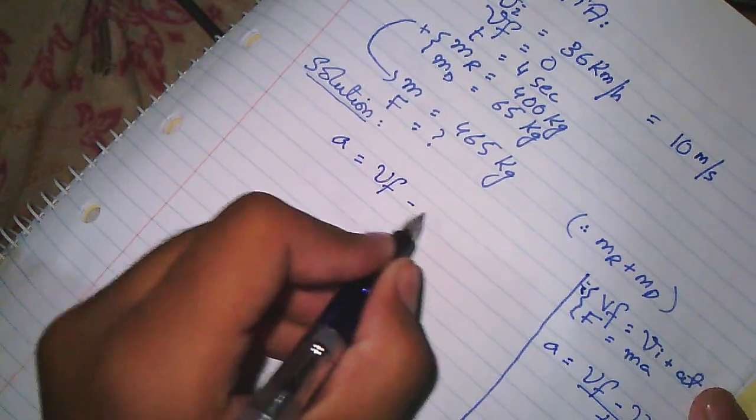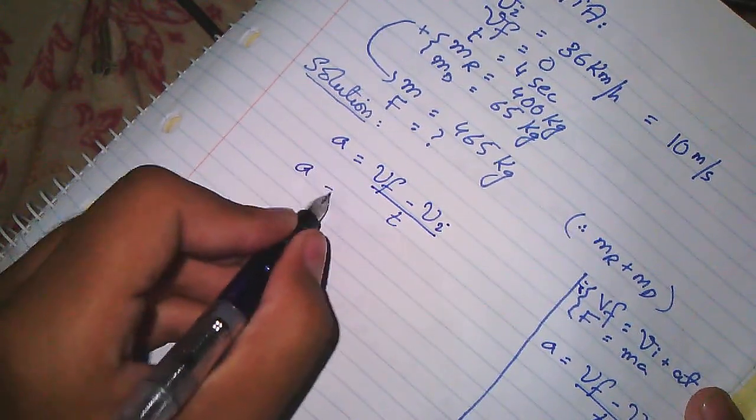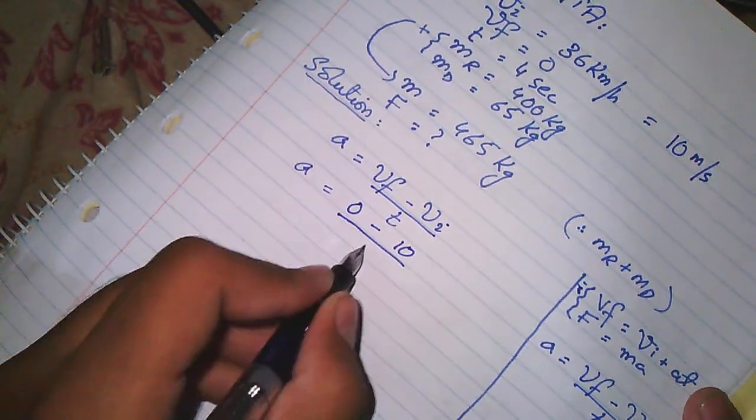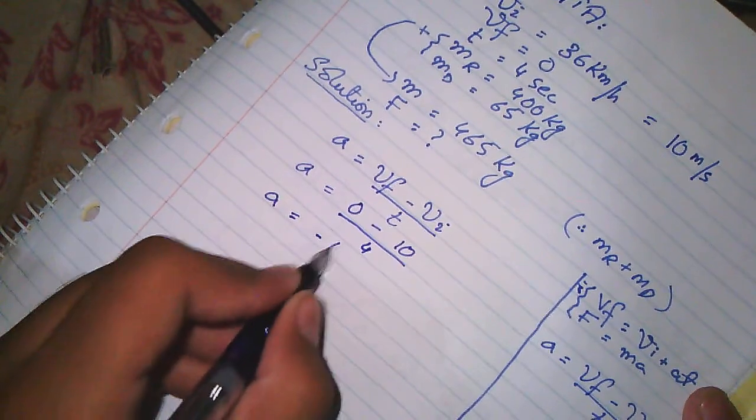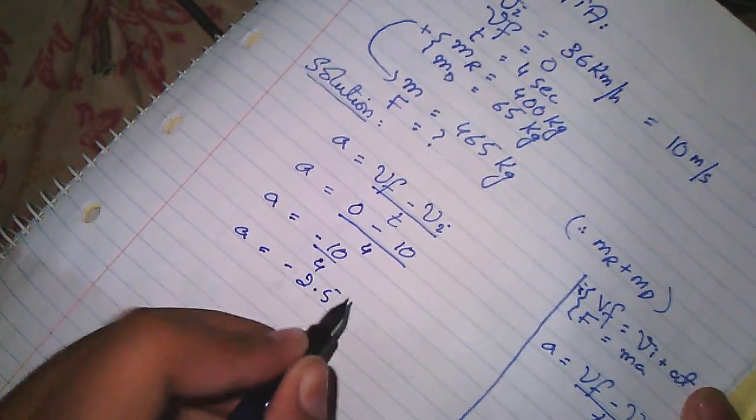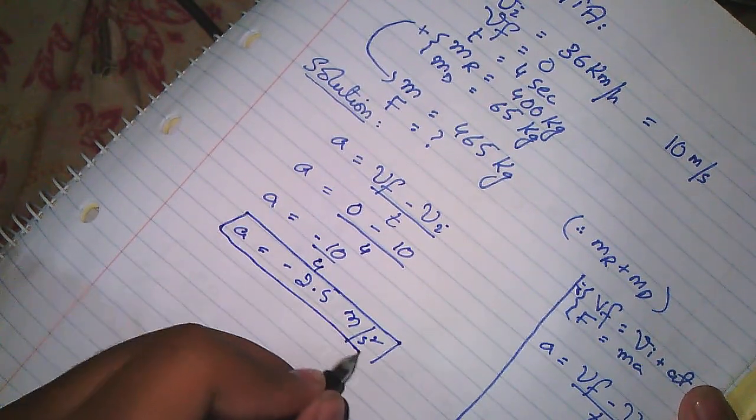A equals VF minus VI divided by T. Acceleration will be equal to 0 minus 10 divided by 4, and acceleration will be minus 2.5 meter per second square.